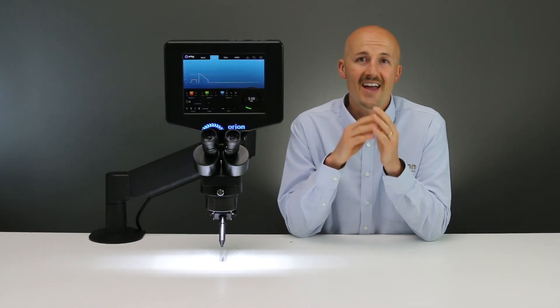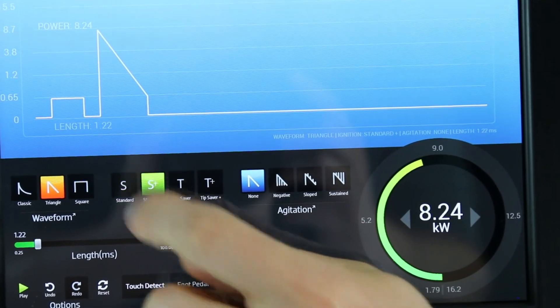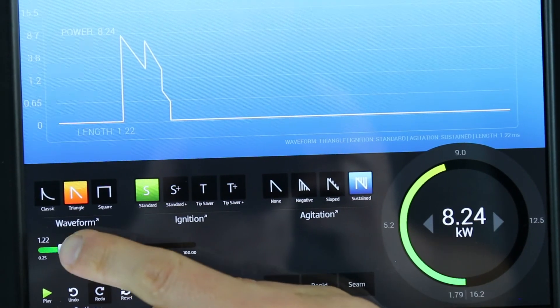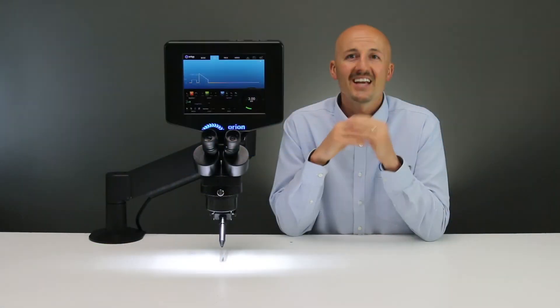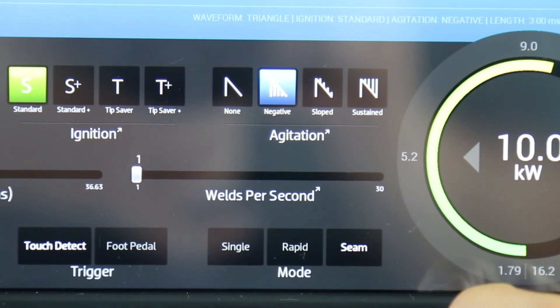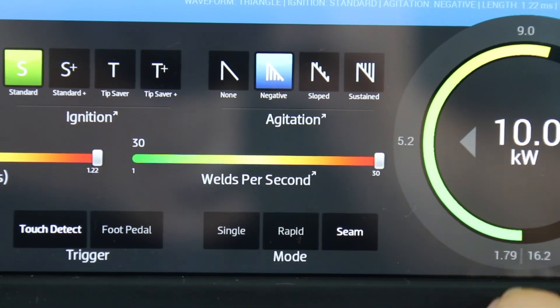The 200i2 includes advanced welding waveforms that give you unrivaled control over your weld. These waveforms give you both additional penetration and smoother welds. Included in the 200i2 is seam mode, which will deliver welds up to 30 welds per second. That's as fast as any laser welding system.